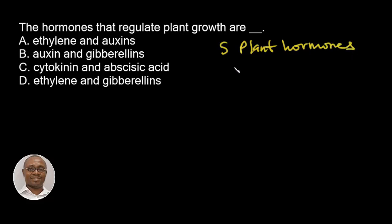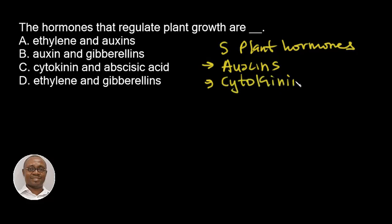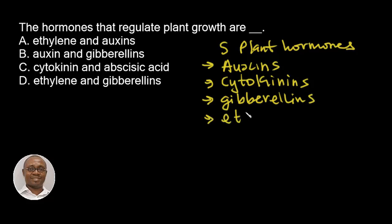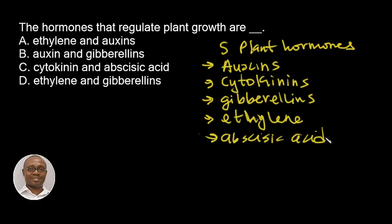which are traditionally described as: Auxins, Cytokinins, Gibberellins, Ethylene, and Abscisic Acid.